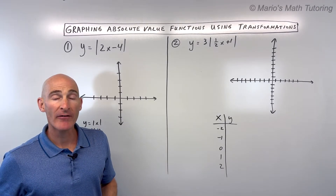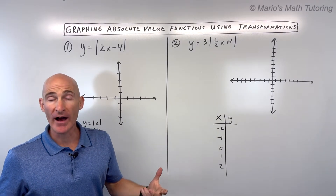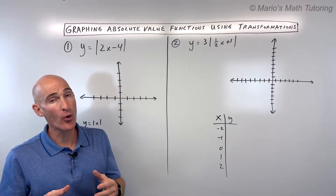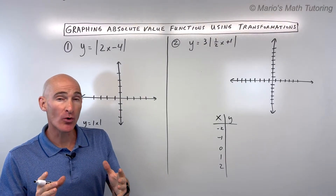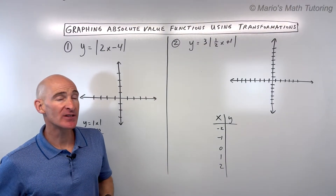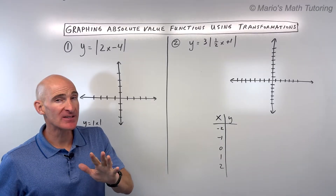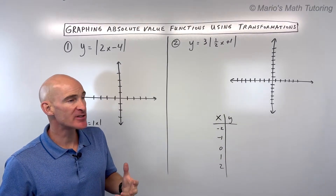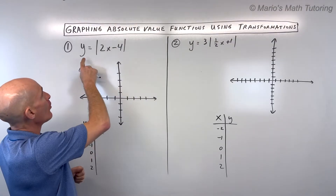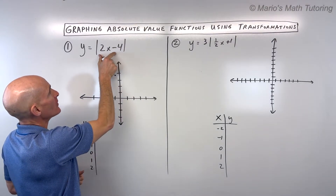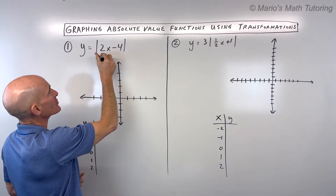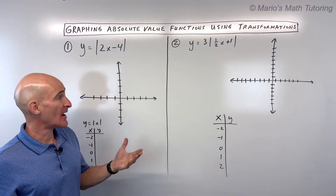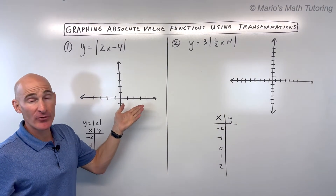In this video, you're going to learn how to graph absolute value functions using transformations, including horizontal stretches and horizontal shrinks. We'll go through five examples together — see if you can practice some on your own. Let's start with this first example: y equals the absolute value of the quantity 2x minus 4. How would we describe the transformations, and how would we get an accurate graph?